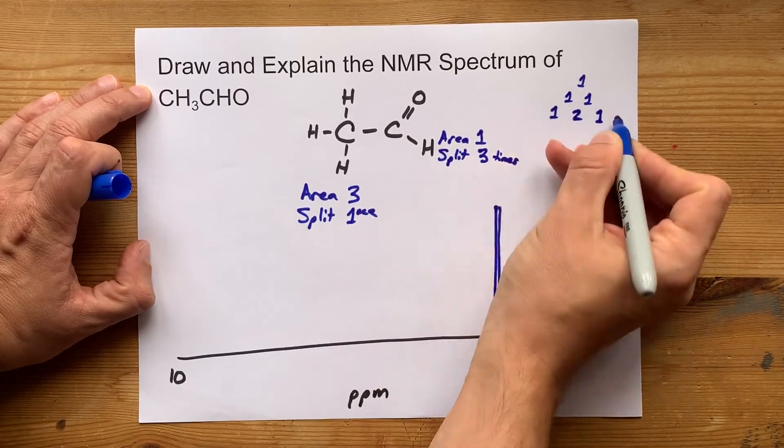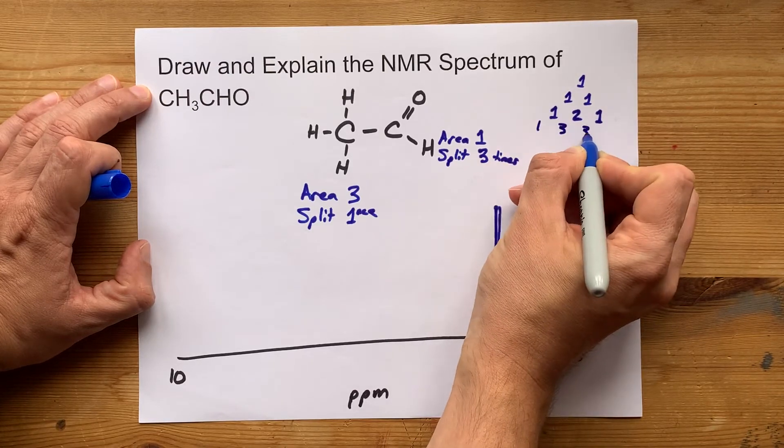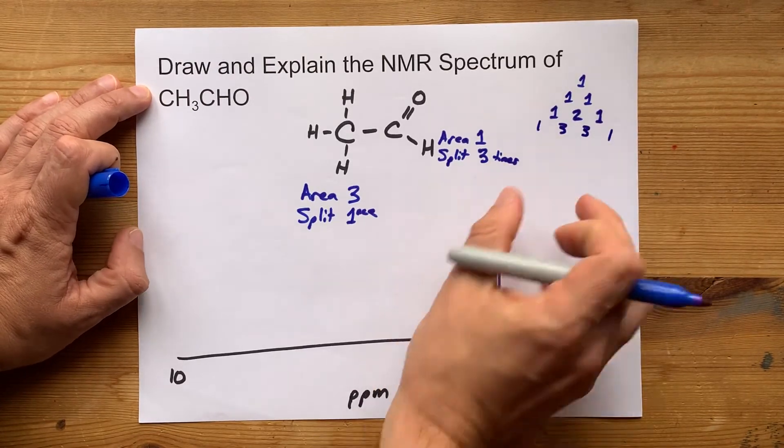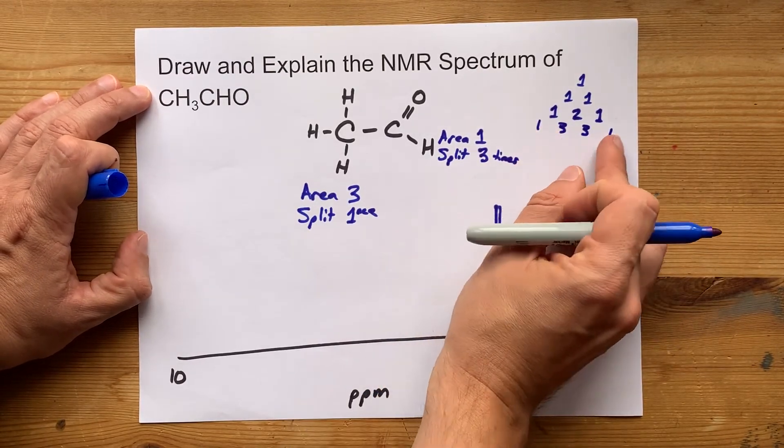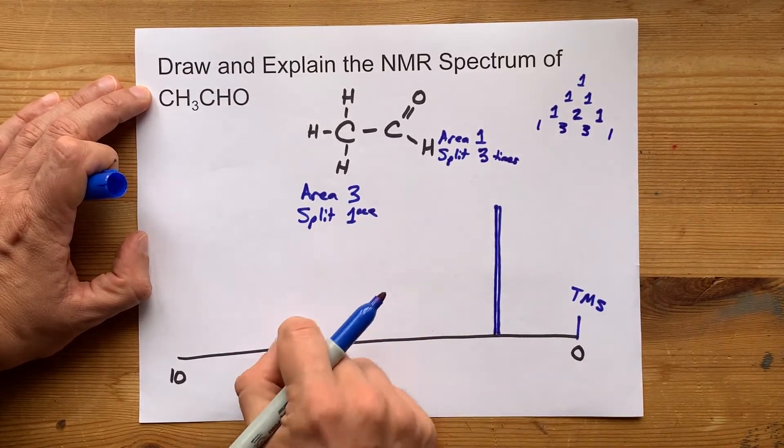And similarly, when you split a third time, you end up with a pattern like one-three-three-one. And this is the beginning of Pascal's triangle, if you're curious, but I'm just trying to show you where I'm going to get the peak arrangement.